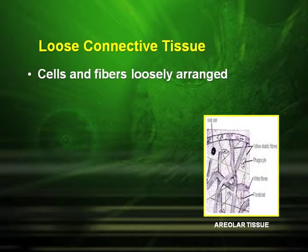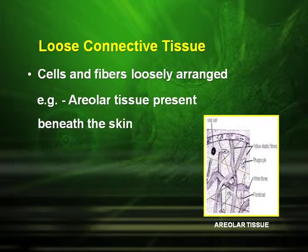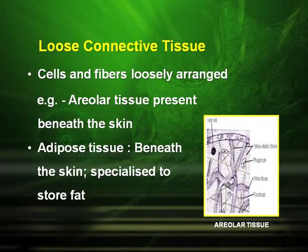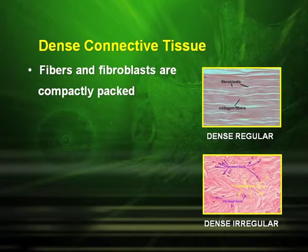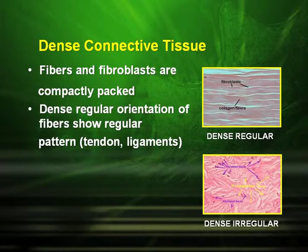In loose connective tissues, the cells and fibers are loosely arranged. For example, the areolar tissue found beneath the skin, and the adipose tissue found beneath the skin which is responsible for storing fat. In dense connective tissue, the fibers and fibroblasts are compactly packed. Dense regular orientation of fibers shows a regular pattern, seen in tendons and ligaments.